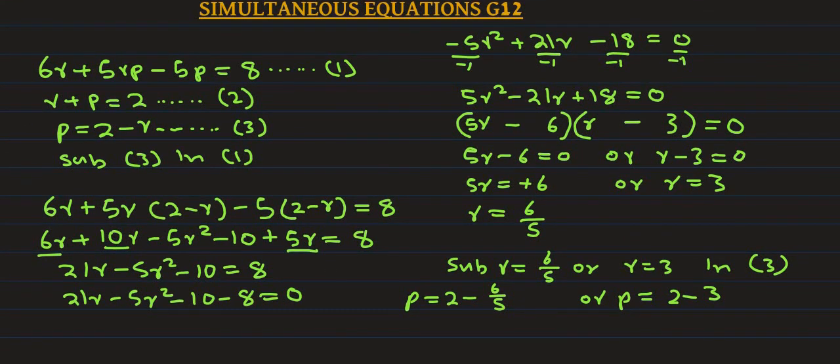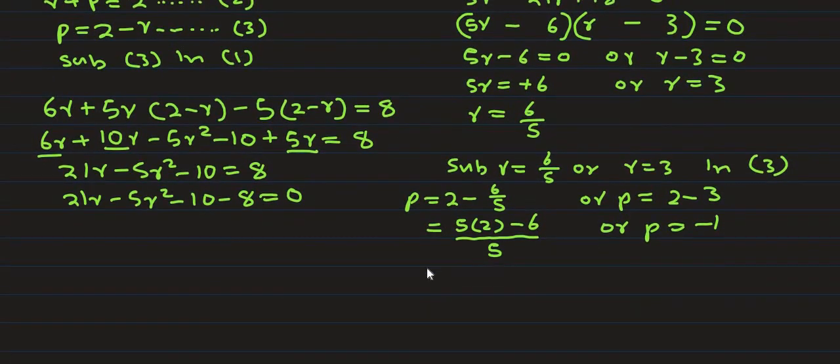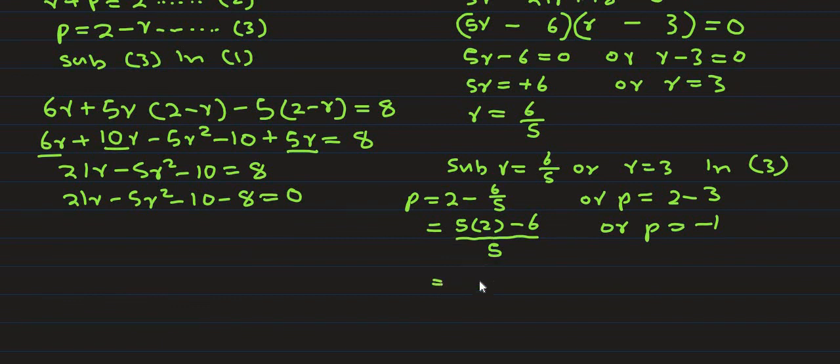When r equals 6/5, p equals 2 minus r equals 2 minus 6/5. Taking common factor 5, we get (5 times 2 minus 6) over 5, which equals (10 minus 6) over 5 equals 4/5. When r equals 3, p equals 2 minus 3 equals negative 1.